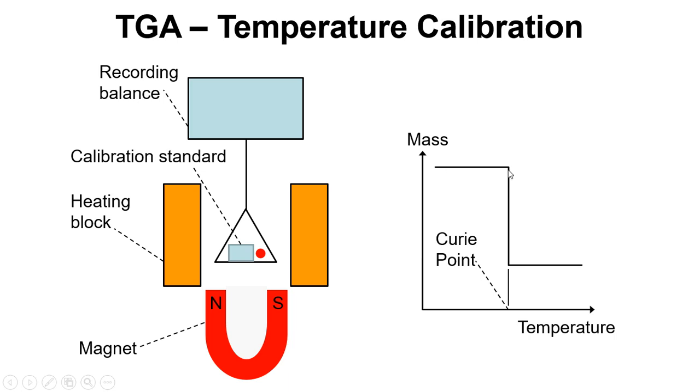Once we get to the Curie point when we heat up, we lose that extra apparent mass because of the force that's been applied here, because the material goes from being ferromagnetic to paramagnetic. We can then calibrate the temperature scale because we're using a material that's got a well-known and well-understood Curie point.